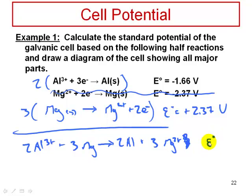The cell potential is 0.71 volts. When you multiply half-reactions, you do not multiply the potentials. The reason is that potential is an intensive property — it does not depend on the quantity of material. Whether you multiply a half-reaction by one, two, three, or ten, the potential stays the same. The standard potential for this cell is positive 0.71 volts, and the reaction is spontaneous because it has a positive potential.